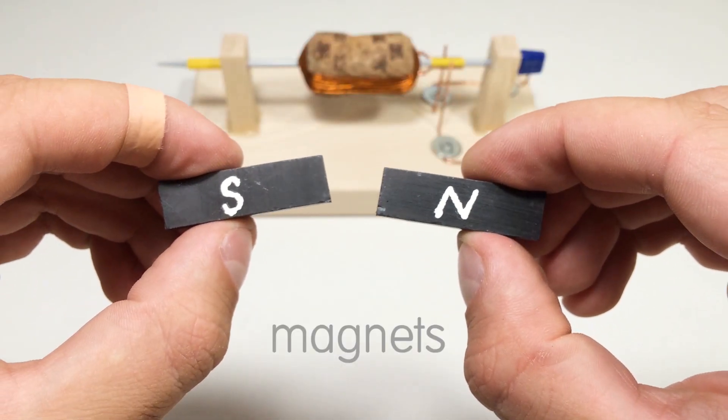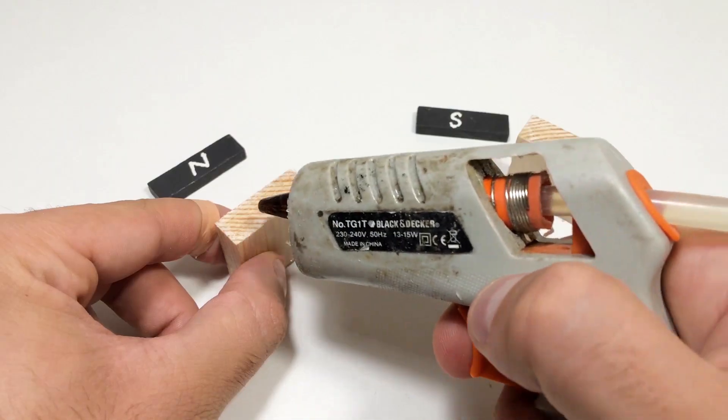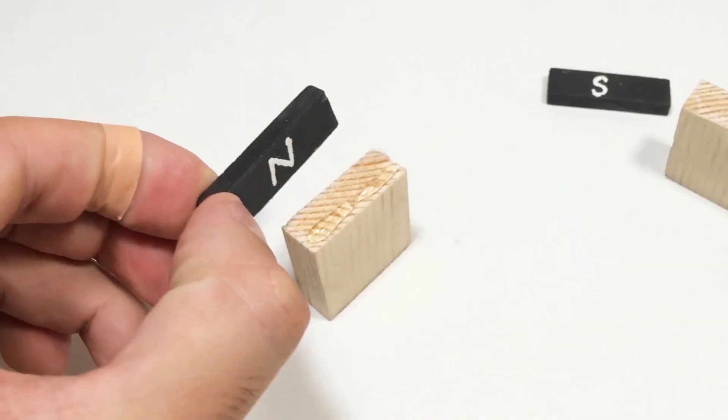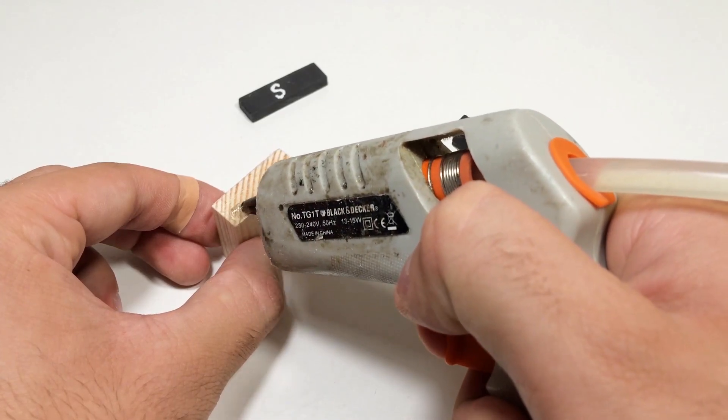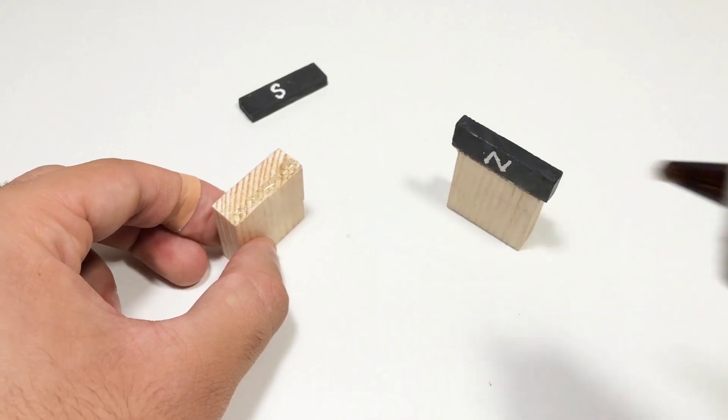Next, the magnets. Place them right underneath the coil as close as possible without touching. Make sure the poles are facing opposite directions. This creates a strong magnetic field for the coil to interact with.